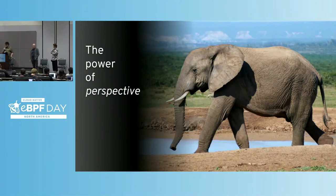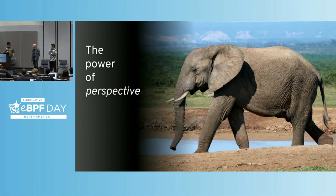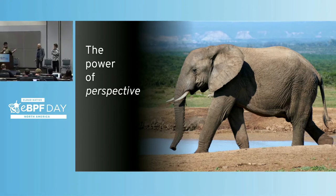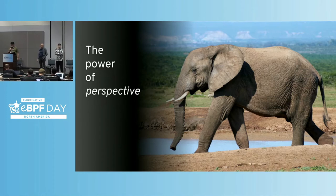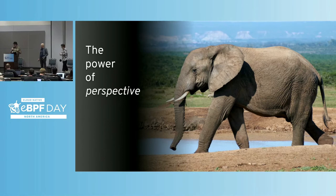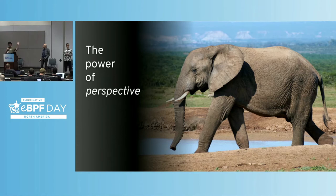We start with a story of six blind men discovering an elephant for the first time. The first blind man feeling the trunk declares it must be a snake. The second, standing by the flapping ear, says it must be a fan. The third, grasping the tusk, declares it must be a spear. The fourth, wrapping his arms around the leg, says it must be a tree trunk. The fifth touches the side of the beast and says it must be a wall. Finally, the sixth, feeling the tail, describes it as a rope.